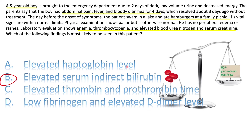Regarding elevated haptoglobin: when red blood cells break down, free hemoglobin is released and carried by haptoglobin. Because of extra hemolysis, haptoglobin will be used up — so it should be down, not up. Elevated thrombin and prothrombin time: no, he has thrombocytopenia because of formation of platelet microthrombi — clotting factors are not used up. So you should expect elevated bleeding time, not thrombin or prothrombin time.